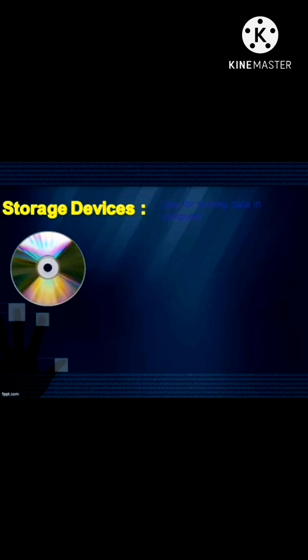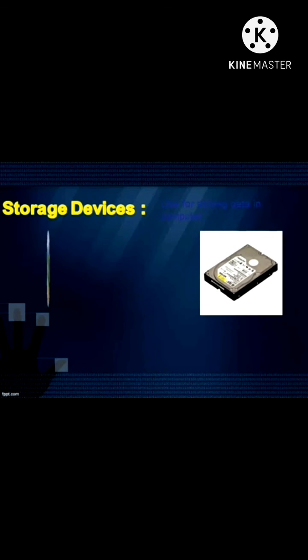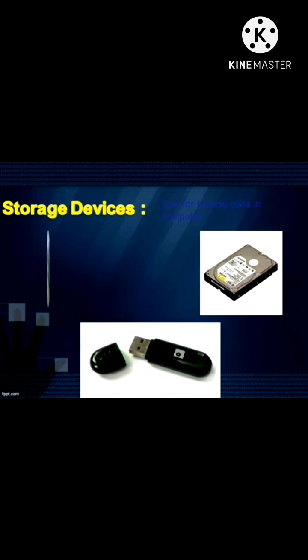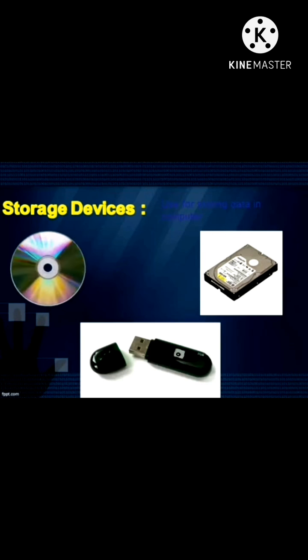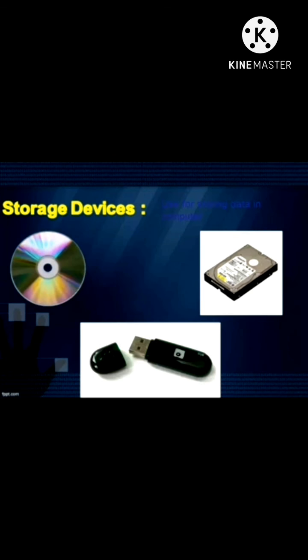CD stands for Compact Disc. It is a round, flat, and shiny disc that stores a lot of information. Hard Disk: It is a device which stores a huge amount of data and information, present inside the CPU box. Pen Drive: It is very small in size but can store and transfer data from one computer to another, and can be handled very easily.